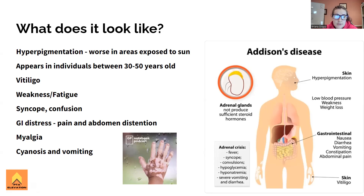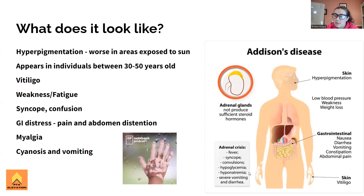Myalgia is another way of saying general pains and fatigue. If they develop symptoms like fever or are passing out, that's not good at all - we definitely need help. Any sort of convulsions due to electrolyte imbalances, hypoglycemia with blood sugar tanking, hyponatremia with low sodium - all going to cause rounds of electrolyte imbalances. They need fluid IVs. Severe vomiting and diarrhea - these are all things where we know we need to do something.